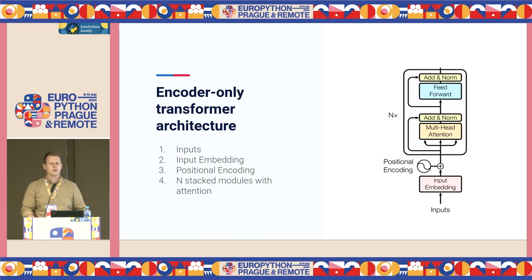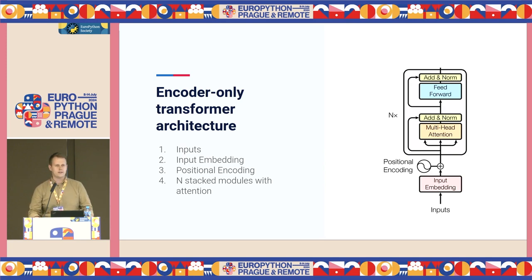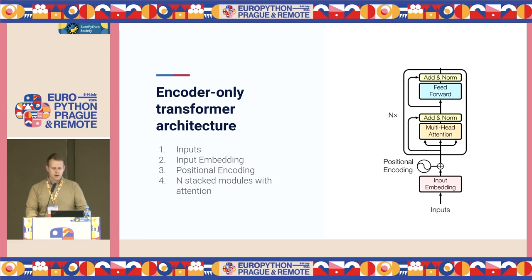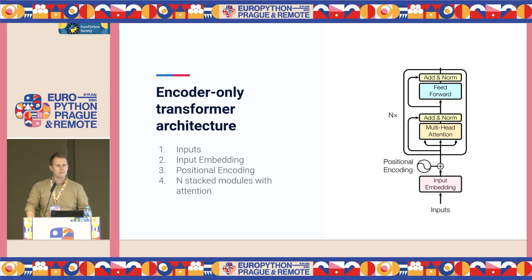Looking at the left-hand side of the diagram, everything starts from inputs, which are converted into input embeddings enriched with positional encodings, and then processed by N stacked modules armed with an attention mechanism. This is a very generic overview and doesn't say much about how the inputs or outputs look like, but considering some examples should give intuition on how things work under the hood.